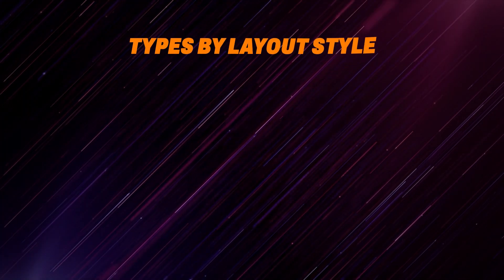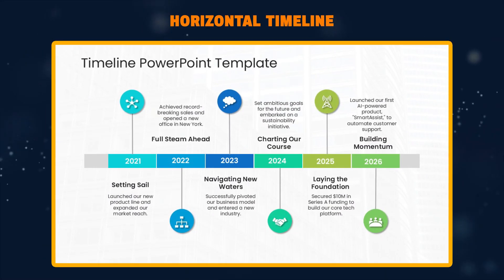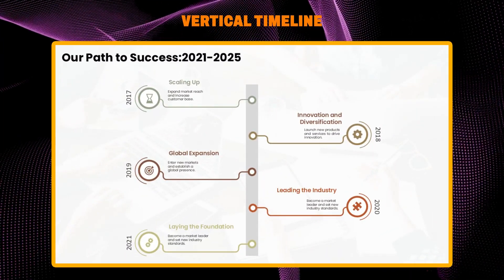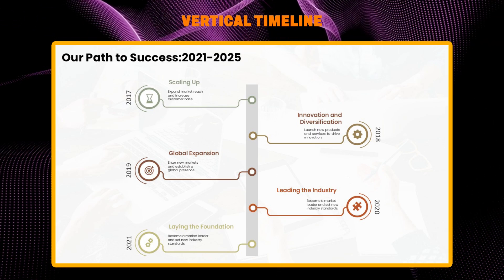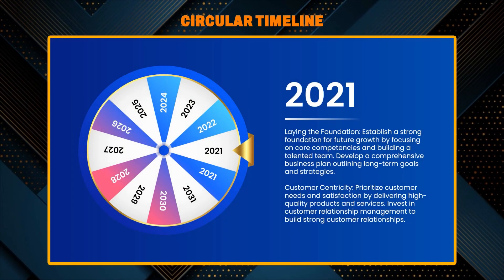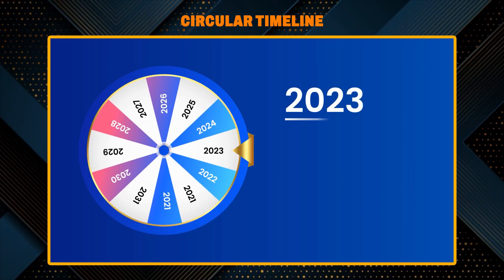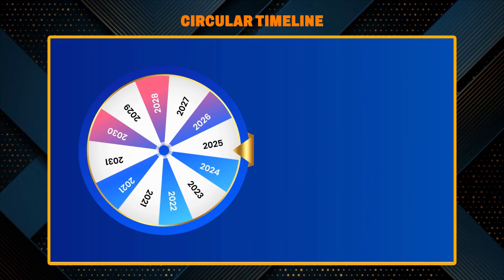First things first, let's explore timelines based on their layout style. We have the classic horizontal timeline — imagine a straight line with dates or milestones marked along it, perfect for displaying a sequence of events. Then there's the vertical timeline: think of it like a to-do list on steroids, with events stacked one on top of another. Feeling a bit more whimsical? Check out the circular timeline, which arranges events in a circle highlighting their cyclical nature.